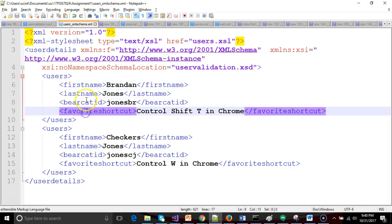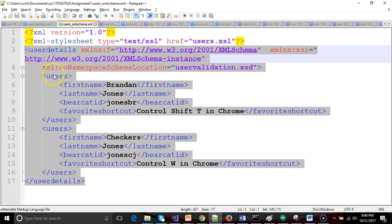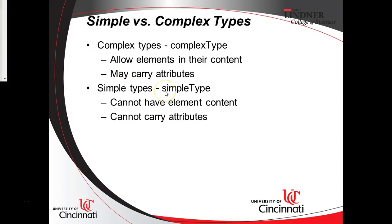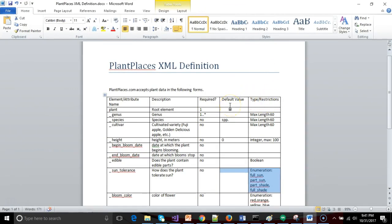Users has four children, so it would be a complex type. User details has users, and users has the individual simple types — so user details is a complex type made of other elements, with child and grandchild elements. A simple element can be typed as a string, a number, decimal, integer, Boolean, or date/time — these describe the type of data between the element tags.